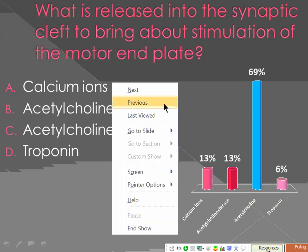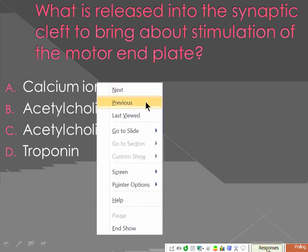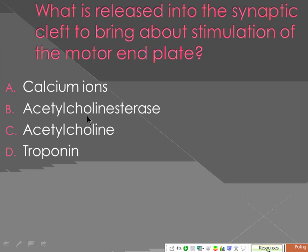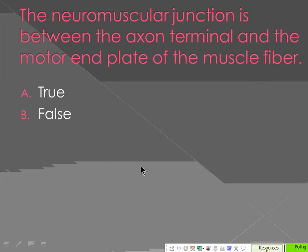Calcium ions are released into the axon terminal, not into the cleft. Acetylcholine is the one released into the cleft. Acetylcholinesterase is present there but is not what brings about stimulation of the motor end plate. Read the question carefully. The neuromuscular junction is between the axon terminal and the motor end plate of the muscle fiber — that is true.